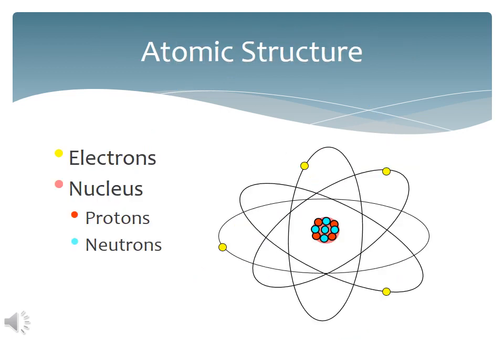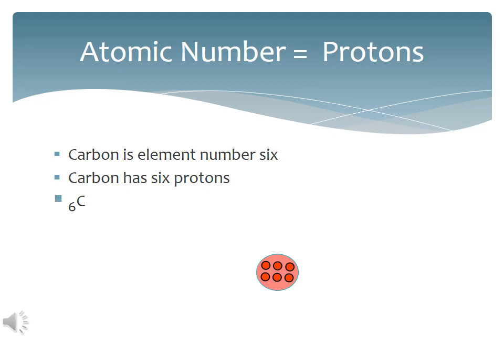Further investigation of the nucleus revealed that the nucleus was made up of positively charged protons and uncharged neutrons. The atomic number is the number of protons in the nucleus of the atom. It is a unique identifier for each element. Every atom of carbon has six protons. Every atom of nitrogen has seven protons. Every atom of oxygen has eight protons.